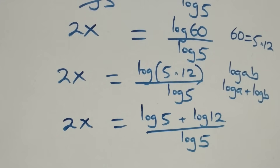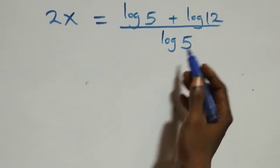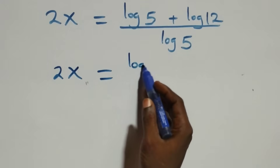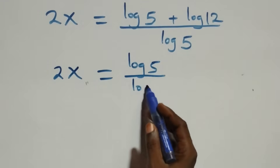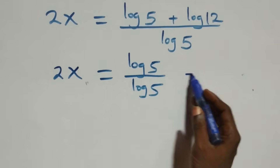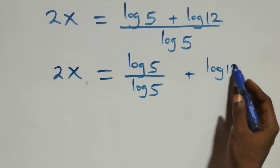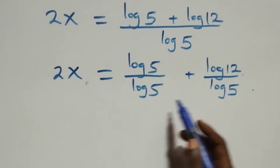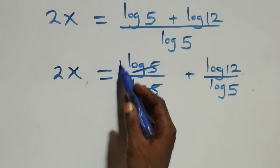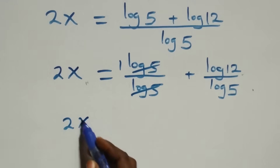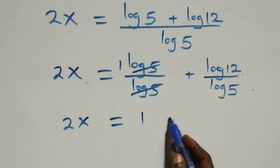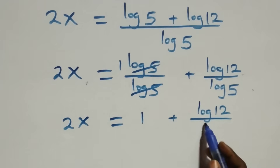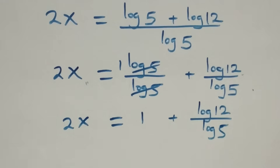The next step: we separate this into two fractions, giving 2x equals log 5 over log 5 plus log 12 over log 5. Log 5 cancels each other on the first term, so 2x equals 1 plus log 12 over log 5.